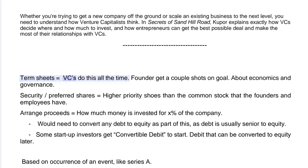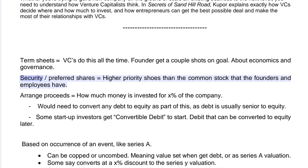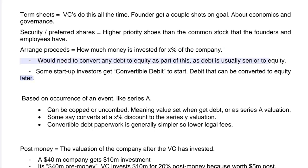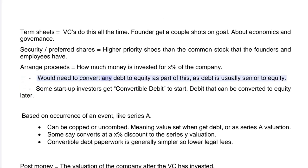Term sheets are primarily about economics and governance. Preferred shares have higher priority than the common stock that founders and employees hold. Aggregate proceeds refers to how much money is invested for a given ownership percentage in the company. Any convertible debt would need to be converted to equity as part of this, as debt is usually senior to equity.